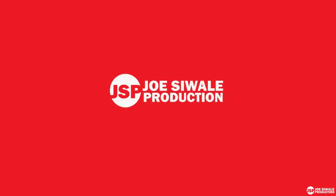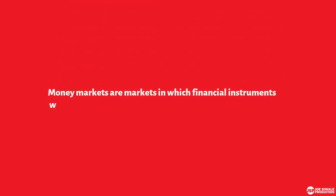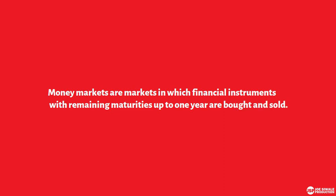Welcome to Just Reproduction. Today we're going to be looking at money markets. Money markets are markets in which financial instruments with remaining maturities of up to one year are bought and sold.